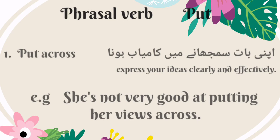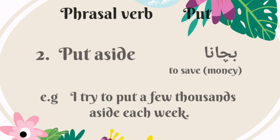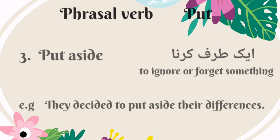The first phrasal verb of put is 'put across.' It means express your ideas clearly or effectively — Urdu mein is ka matlab hai apni baat samjhane mein kamyab hona. For example: she is not very good at putting her views across. The second phrasal verb is 'put aside.' It means to save money — Urdu mein is ka matlab hai paise bachana. For example: I try to put a few thousands aside each week. 'Put aside' also means to ignore or forget something — Urdu mein is ka matlab hai ek taraf karna ya bhool jana. For example: they decided to put aside their differences.